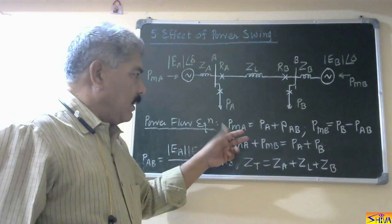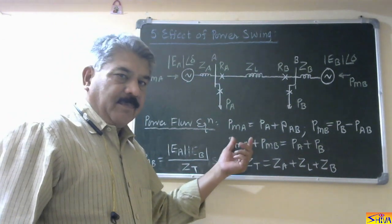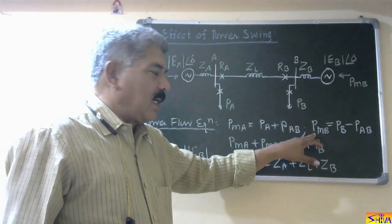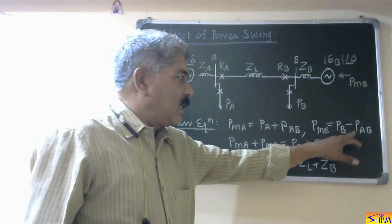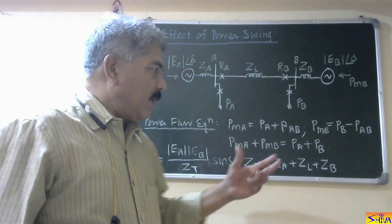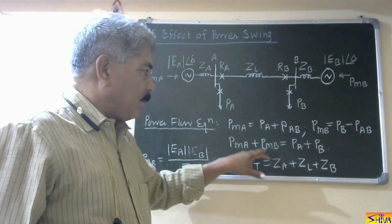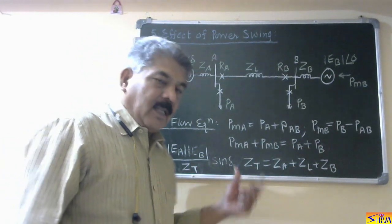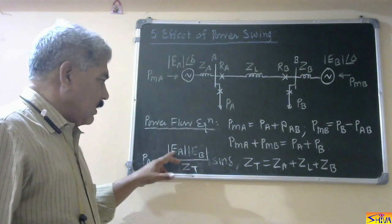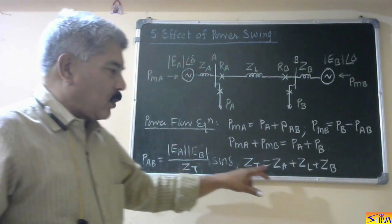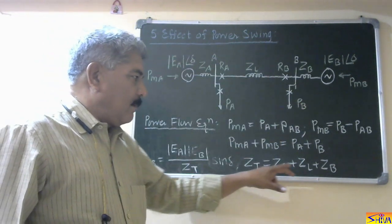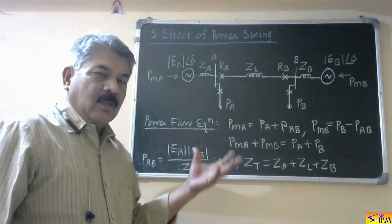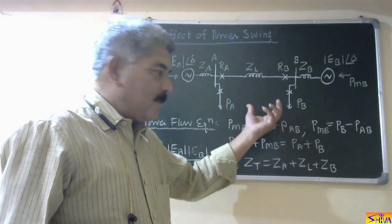Now let us write the power flow equations. Mechanical power input to generator A, neglecting losses, is equal to PA plus PAB. Mechanical power input to generator B, PMB, is PB minus PAB, because power PAB is flowing from A to B. Total mechanical power input PMA plus PMB equals PA plus PB. The power flow equation from A to B is: PAB equals EA times EB divided by ZT into sine delta, where ZT is total impedance, that is ZA plus ZL plus ZB.